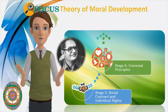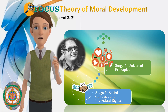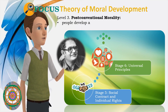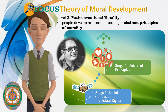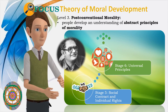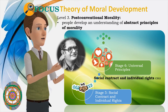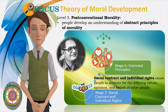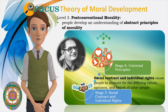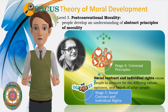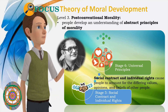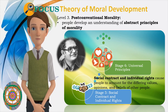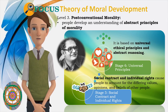The last level of Kohlberg's moral development is Level 3: post-conventional morality. At this level, people develop an understanding of abstract principles of morality. Stage 5 is social contract and individual rights. The ideas of a social contract and individual rights cause people to begin to account for the differing values, opinions, and beliefs of other people. Rules of law are important for maintaining a society, but members of the society should agree upon these standards. Stage 6 is universal principles. Kohlberg's final level of moral reasoning is based on universal ethical principles and abstract reasoning. At this stage, people follow these internalized principles of justice and beliefs, even if they conflict with laws and rules.